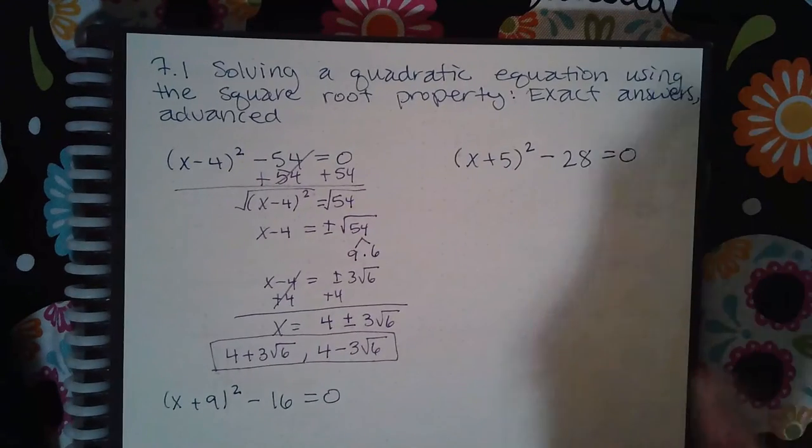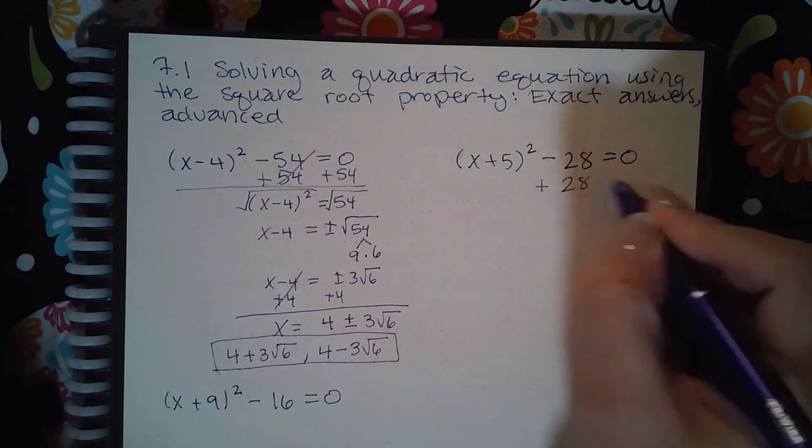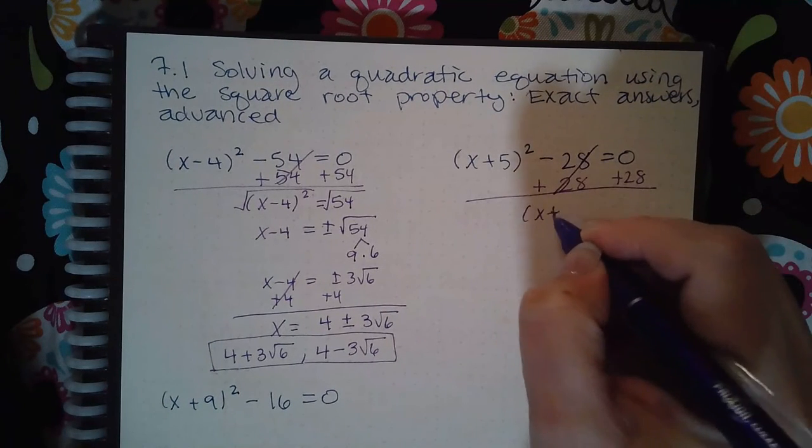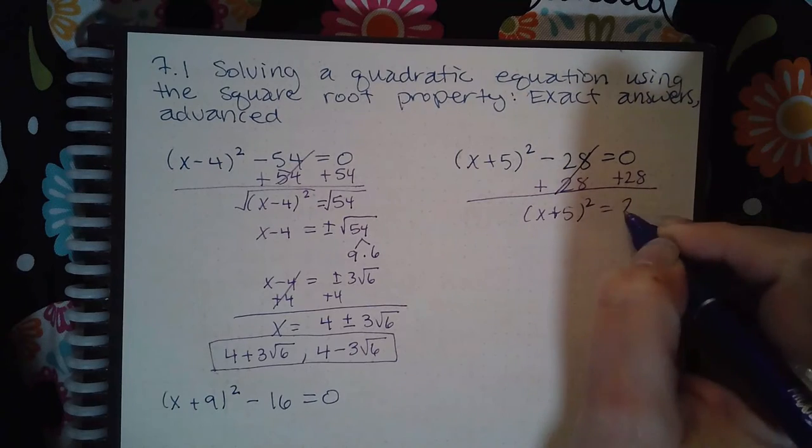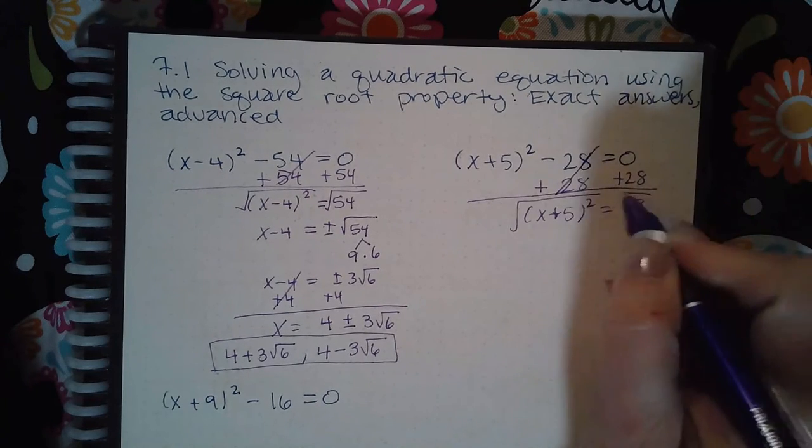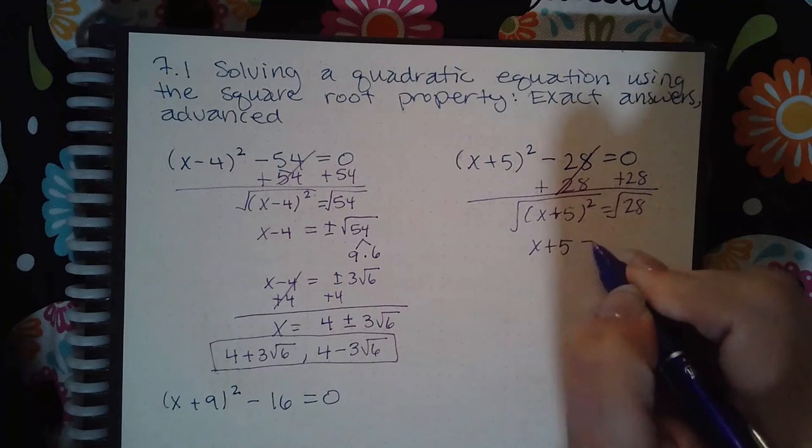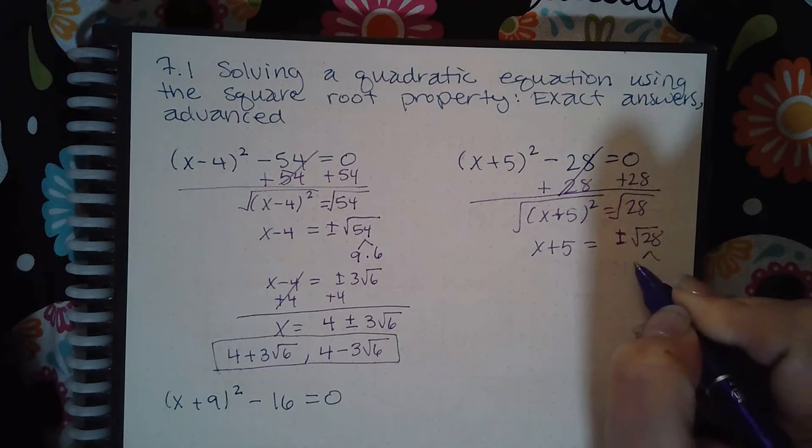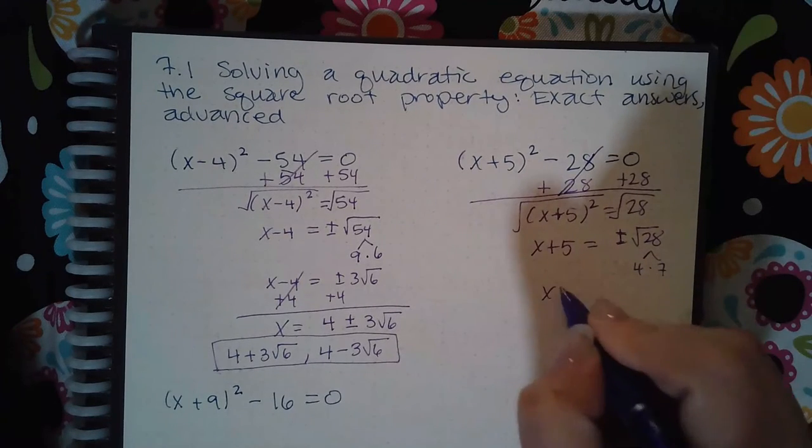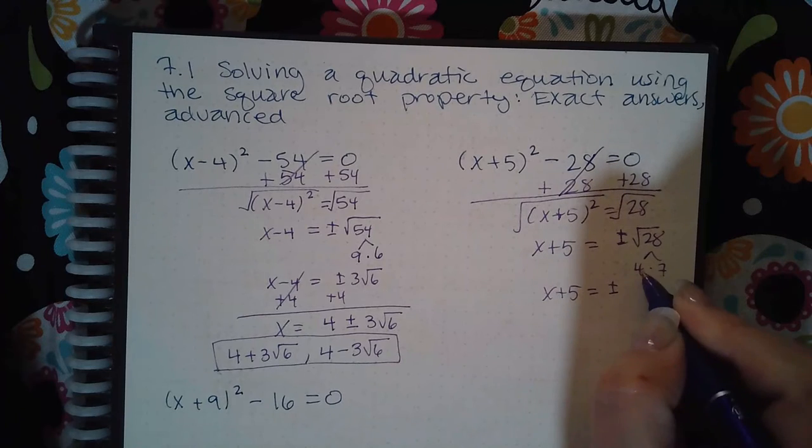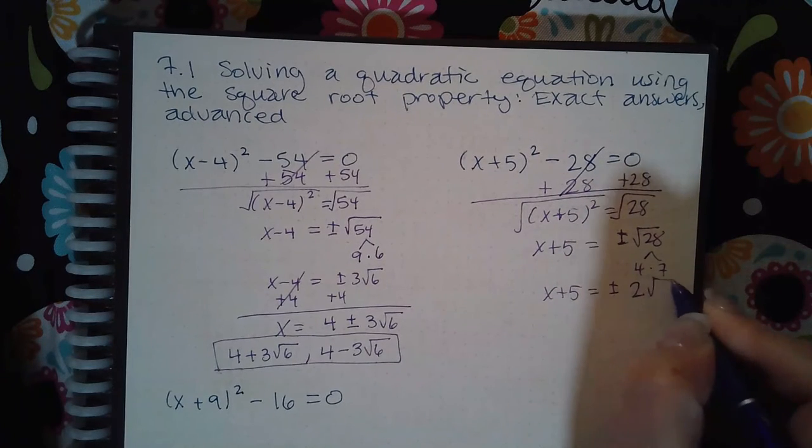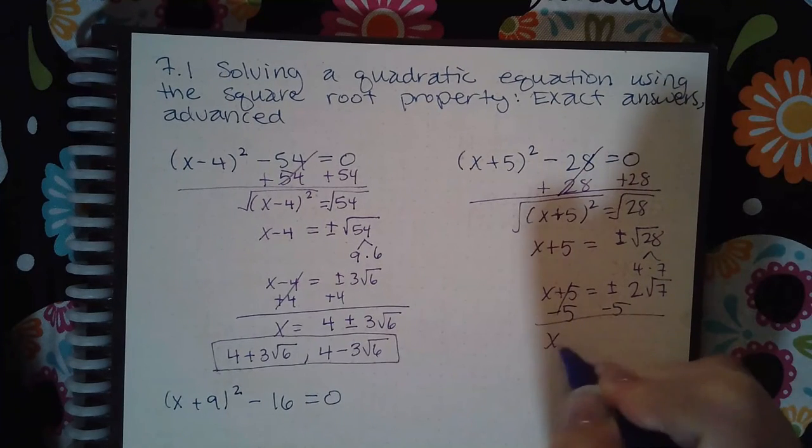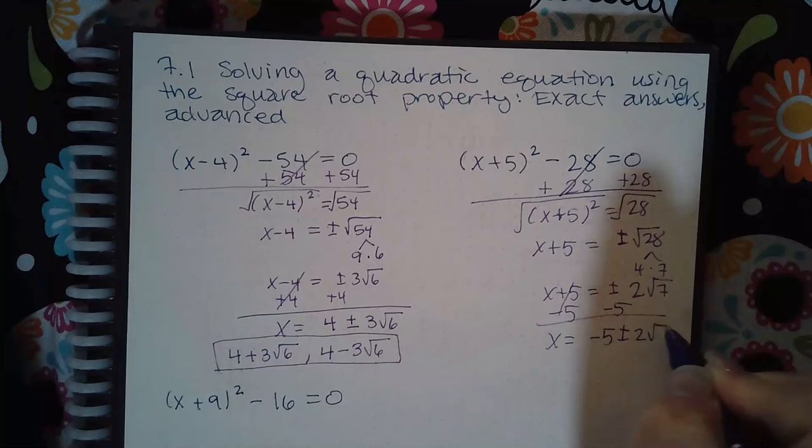Similarly, if I work on this example, I would have to add 28 to both sides. So I get (x + 5)² equals 28. Then I could take the square root on both sides. I get the expression x + 5 equals plus or minus the square root of 28. This is 4 times 7. So I get x + 5 equals plus or minus 2√7. Subtract 5 on both sides, we get -5 ± 2√7.